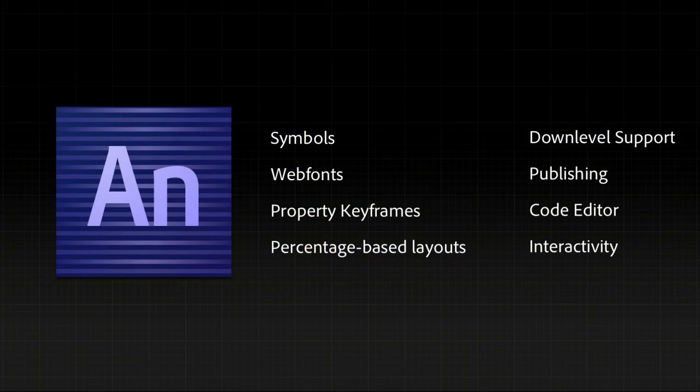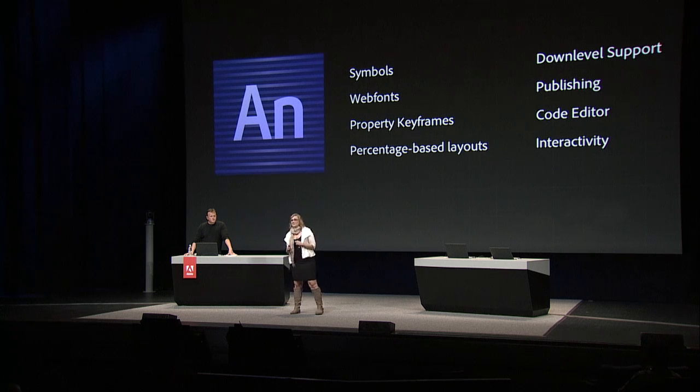Edge Animate — formerly known as just Edge — has had seven public previews released, each delivering amazing new features. These include symbols (same concept as in Flash Pro), symbol export for reusable symbol libraries shareable between users, web fonts, property-based keyframes with easy access to all keyframe properties, and the unique concept called the pin which easily allows keyframe creation and saves time. Percentage-based layouts were introduced in Preview 7, so content can adapt to any viewport.